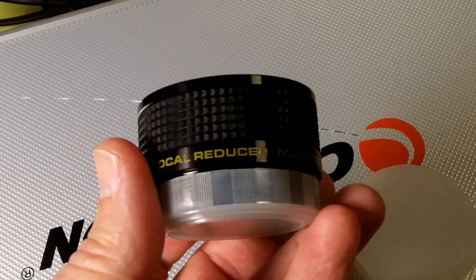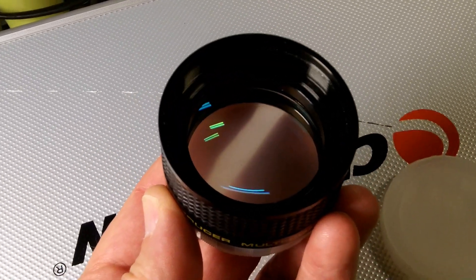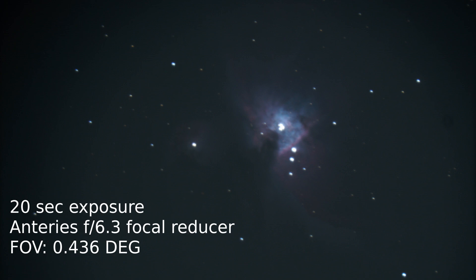And so the extra size of your field of view isn't really all usable. So I'm not certain this is going to give me any advantages over the 6.6 focal reducer I already own, at least with the Sony camera.